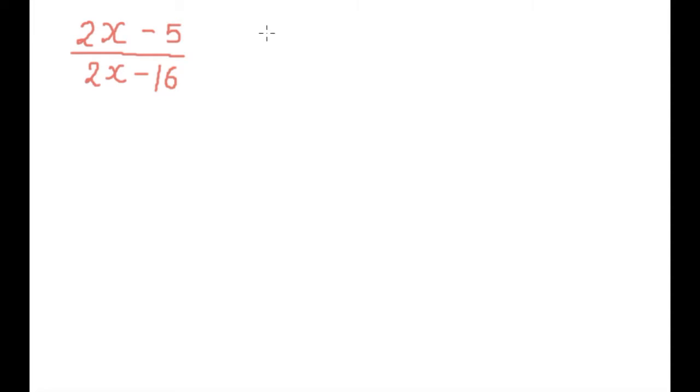We will find the value of x that makes the denominator zero. For this, we have to solve only the denominator equation: 2x minus 16 equals zero.